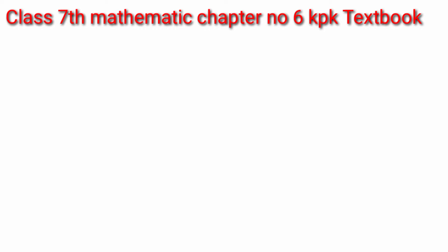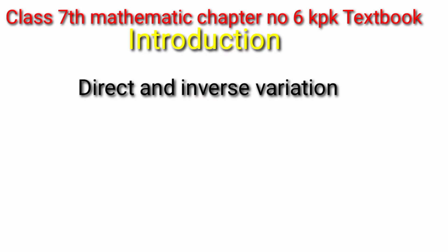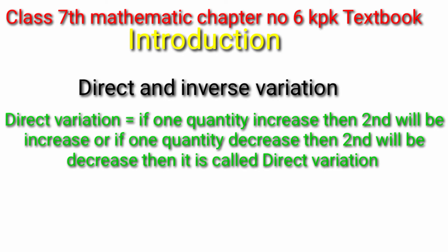Auzubillahiminashshaitwanirwajeeem Bismillahirrahmanirrahim. Class 7th Mathematics Chapter No. 6 KPK Textbook. Introduction: Direct and inverse variation. Direct variation: if one quantity increase then the second will be increased. If one quantity decrease then the second will be decreased. Then it is called direct variation.